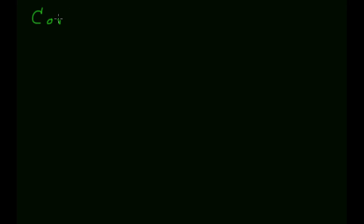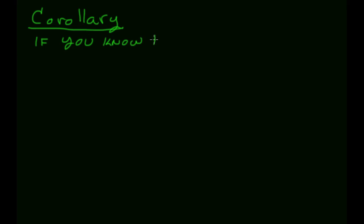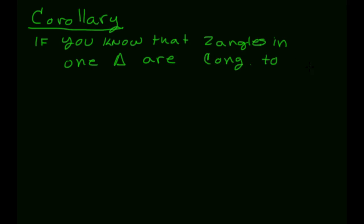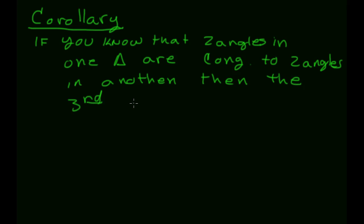A corollary is an accepted statement that follows directly from a theorem without any additional proof. We get four corollaries that come directly from the Triangle Angle Sum Theorem. The first says: if two angles in one triangle are congruent to two angles in another triangle, then the third angles must also be congruent.